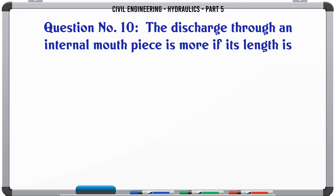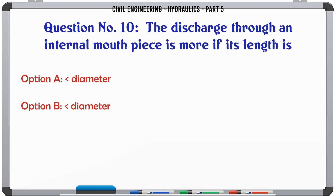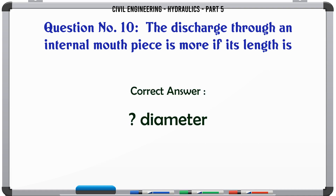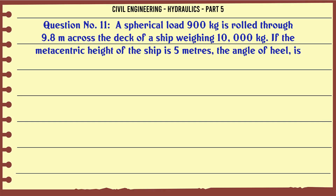Discharge through an internal mouthpiece is more if its length is: A. equal to diameter, B. less than diameter, C. greater than diameter, D. none of these. The correct answer is diameter.